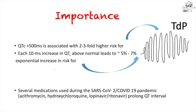So why should we care? QTc prolongation is associated with a life-threatening ventricular arrhythmia called torsades de pointes. Data from patients on QTc-prolonging medications and those with genetically prolonged QTc suggests that if the QTc is more than 500 milliseconds, it is associated with a two- to three-fold higher risk of this arrhythmia. This is especially relevant now during the COVID-19 pandemic, where we are widely using medications that have the possibility of prolonging the QT interval, such as azithromycin, hydroxychloroquine, lopinavir, and ritonavir.